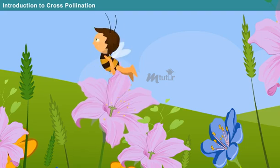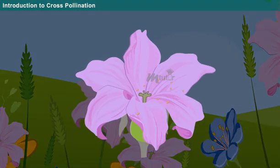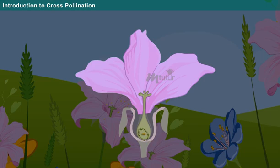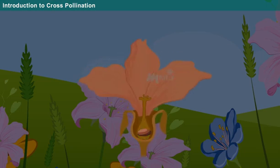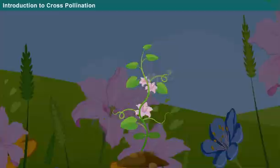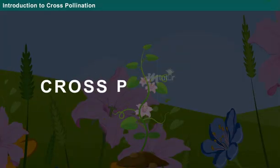The role of the bee ends there. The female flower then carries out its regular process of reproduction. The new seed germinating from the female flower possesses the characteristics of both the X and Y flowers. This process is known as cross-pollination.